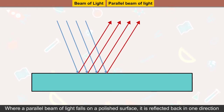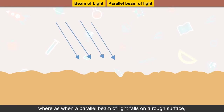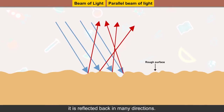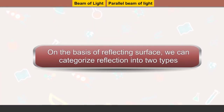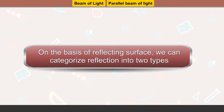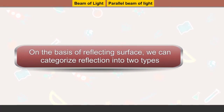When a parallel beam of light falls on a polished surface, it is reflected back in one direction, whereas when a parallel beam of light falls on a rough surface, it is reflected back in many directions. On the basis of the reflecting surface, we can categorize reflection into two types.